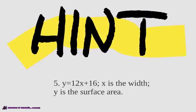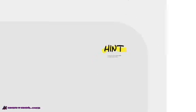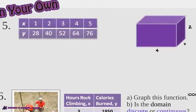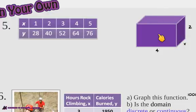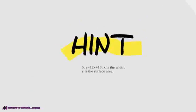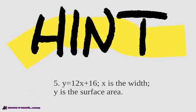This is the surface area of a particular shape. If you look back, how do you find the surface area of this shape? You find the area of the base, find the area of the sides, top and bottom, back and front — add them all together. You end up with the equation 12x plus 16, where x is the width and y is the surface area.